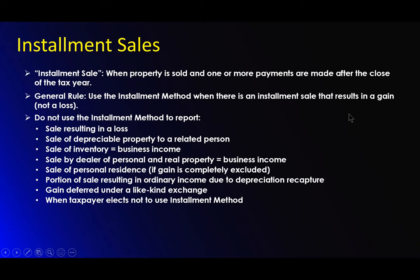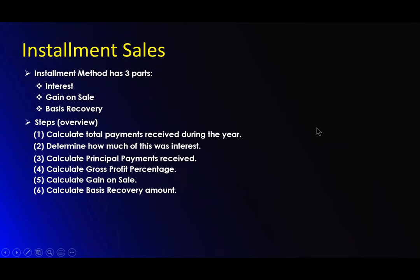You do not use the installment method to report those items. The installment method has three parts: interest, the gain on the sale, and the basis recovery. So for our installment sales calculation: first, calculate the total payments received during the year. This is just during the tax year itself. Determine how much of it was interest — calculate how much of the payment was interest. Calculate the principal payments received — that's simply taking the interest out from the amounts of the payments. Calculate the gross profit percentage — the actual profit in percentage form. Calculate the gain on the sale — how much was made. Then calculate the basis recovery amount.